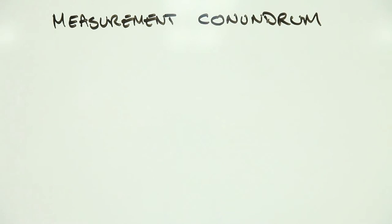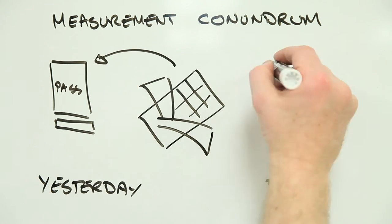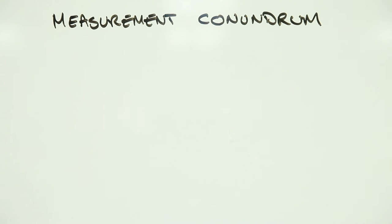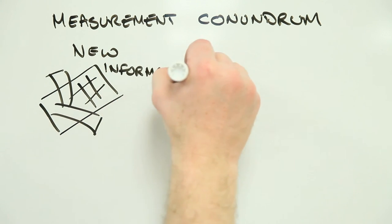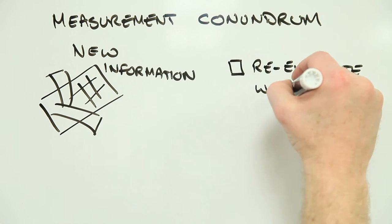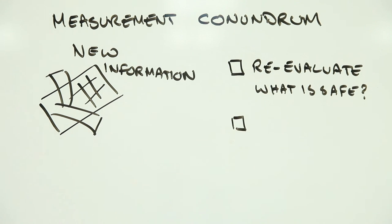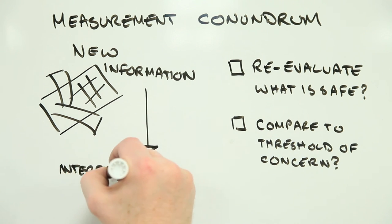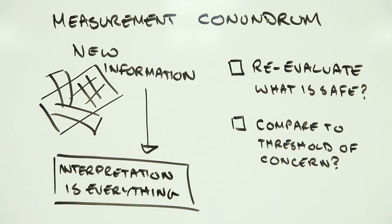The measurement conundrum is real. When we can measure something we couldn't measure before, we need to know what to do with the new information. In some cases, this might mean re-evaluating what a safe level is. In others, it might mean recognizing the difference between what we can measure and what is OK. In both cases, we need to know what the measurements mean, not just what they are.